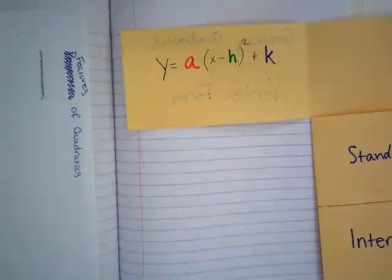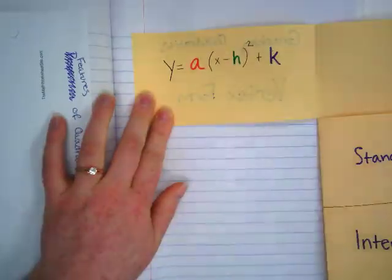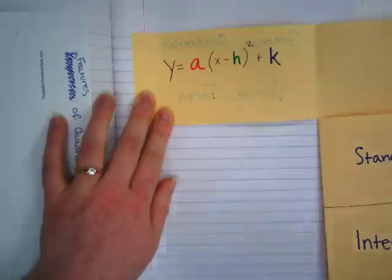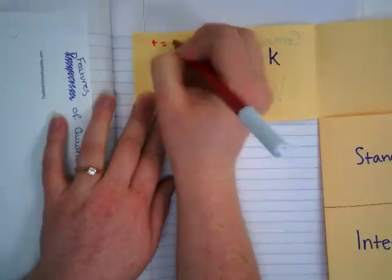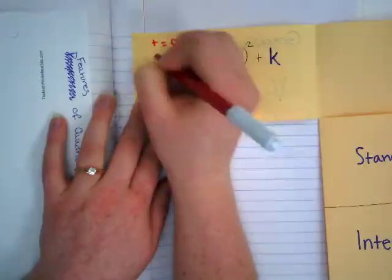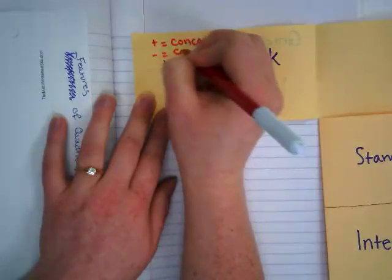So this is where you are using your three different colors. Our A value, the sign of our A value determines whether our graph is going to be concave up or concave down. For all forms, if it is a plus, if it's positive, then it's concave up. If it is negative, it is concave down.